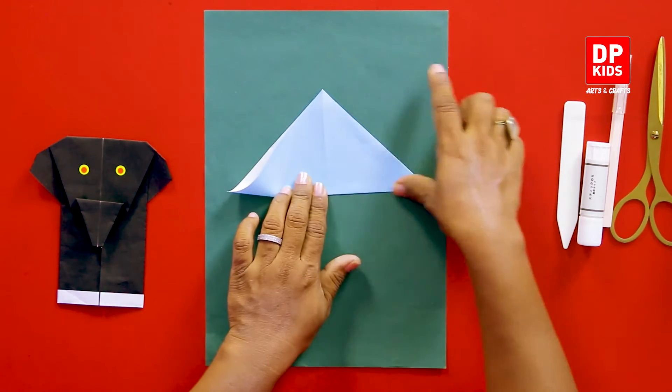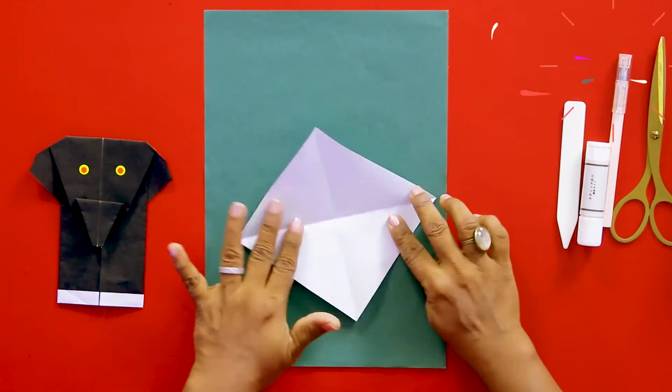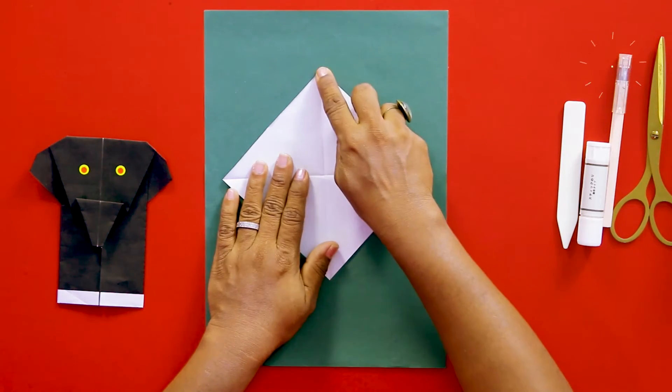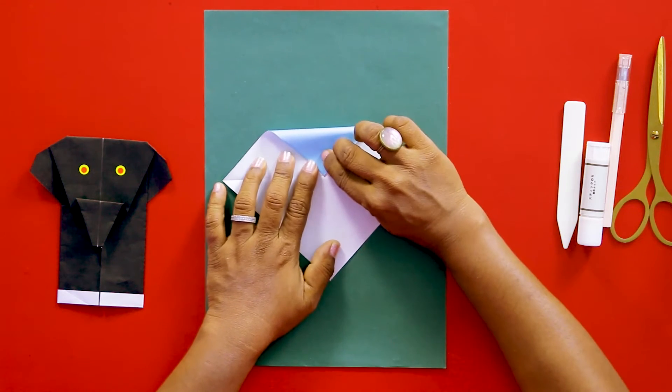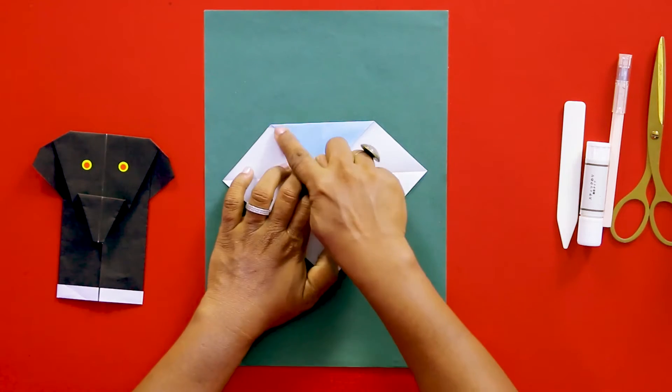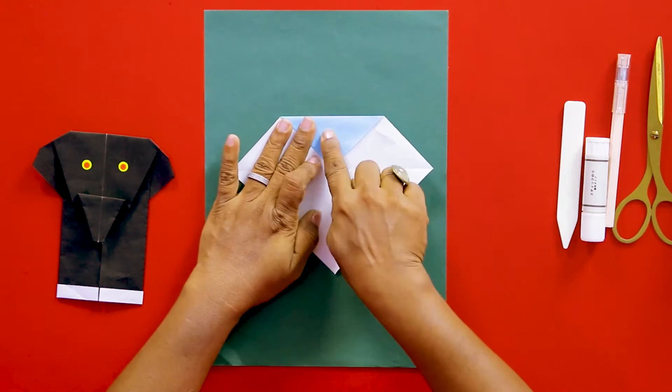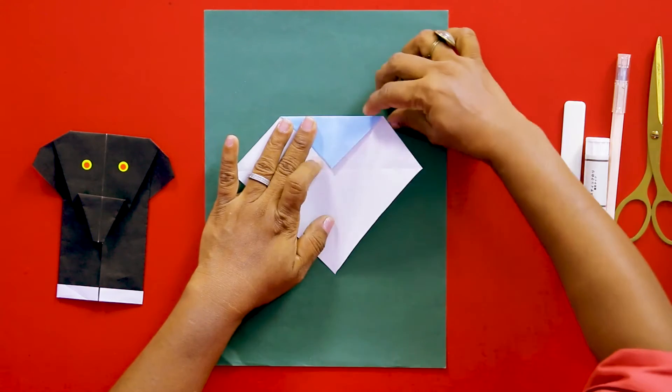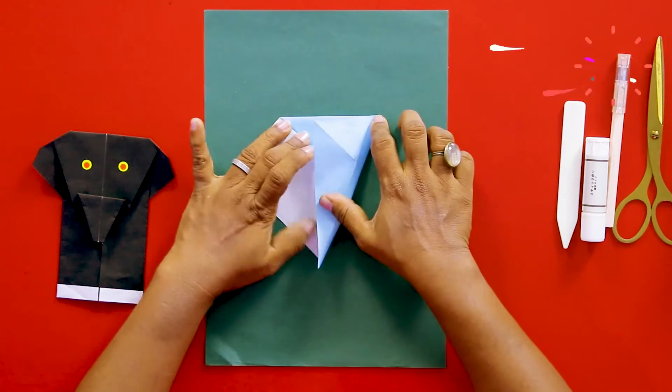Now open it up. Now select this corner, bring it to the middle here. Now this is how we are making the head. Can you see? Now this edge comes to the middle. From here you have to push it from here.